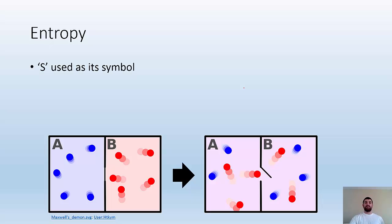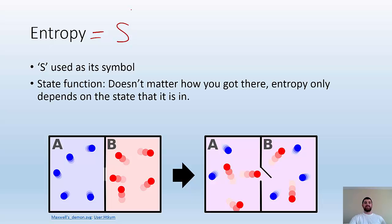Some more about entropy. We use S as its symbol. So entropy, we abbreviate with S. It's a state function, which kind of helps with remembering that, right? S, entropy, state function. They both start with S. Basically, all that means is it doesn't matter how you got there. Entropy only depends on the state that it's in. How it is right now doesn't matter how it got there. It's describing how it is.